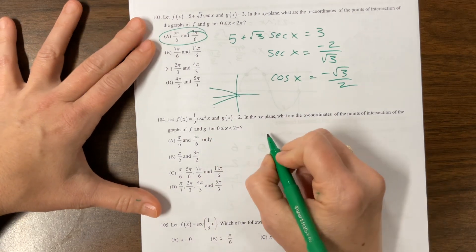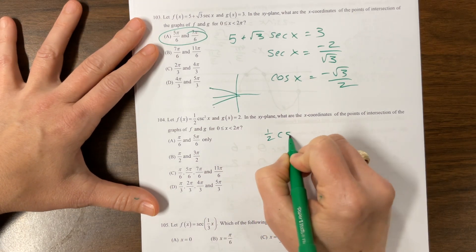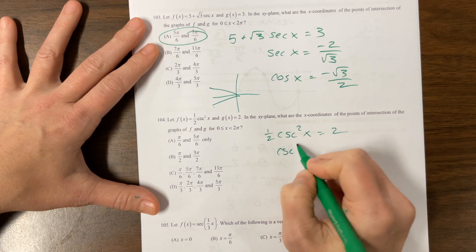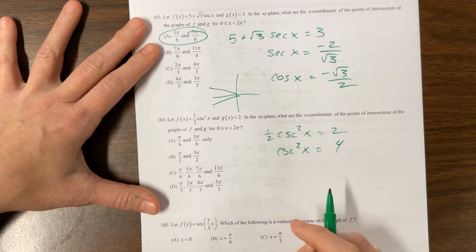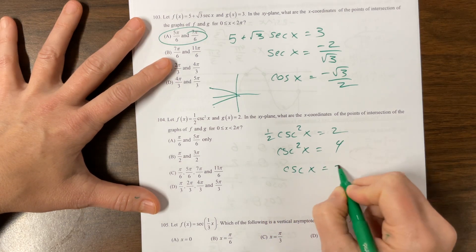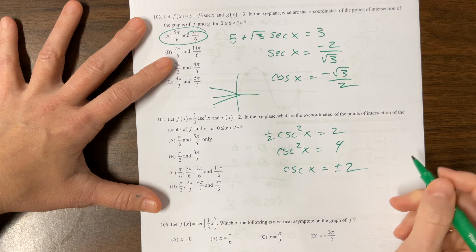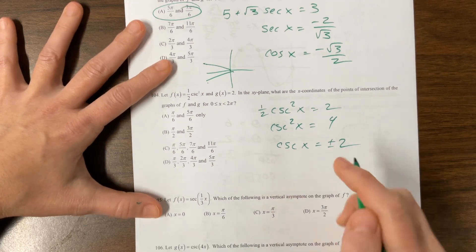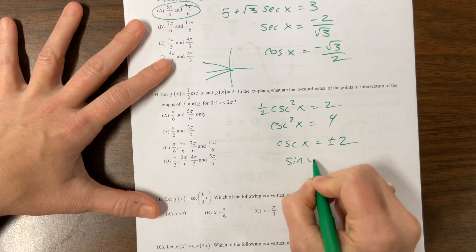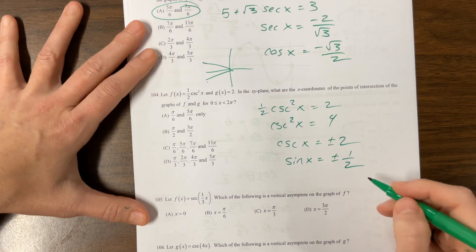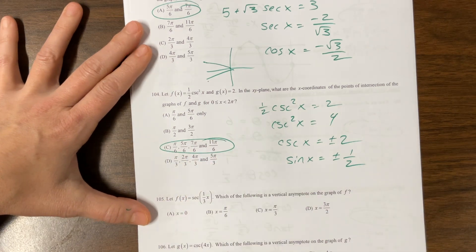We have 1 half cosecant squared x is equal to 2. Multiply both sides by 2. Cosecant squared x is equal to 4. Square root, square root, plus minus. And I get cosecant of x is equal to plus or minus 2. Cosecant is sine's buddy. So the reciprocal of this is equal to the reciprocal of that. When does sine equal plus or minus 1 half? That's the pi over 6 family, and it's the whole pi over 6 family.